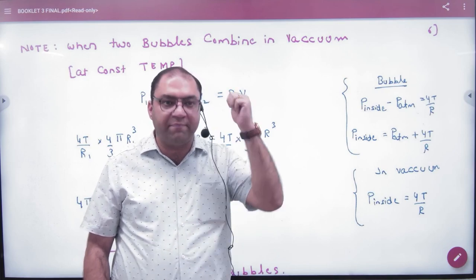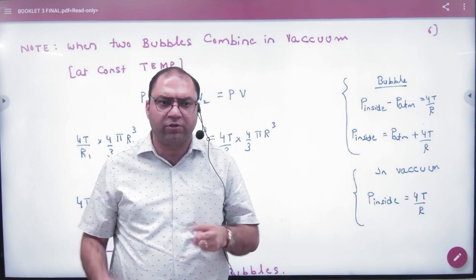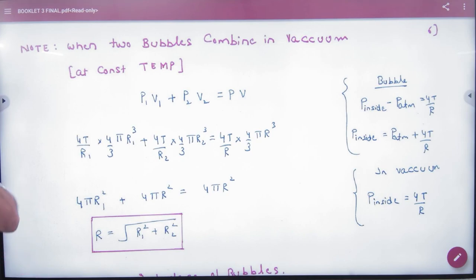But if it is constant temperature, then it will be P into V. When temperature is constant for gases, there are two gases mixed in this case, so Boyle's law can be applied. In these two cylinders,